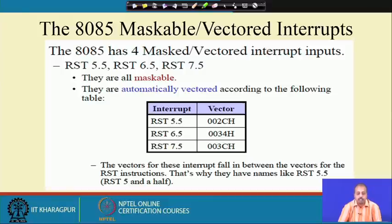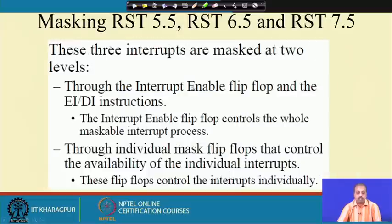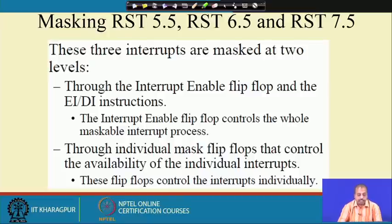We can mask off these interrupts. They are also vectored interrupts because the addresses are fixed — they are automatically vectored as per the table shown. Masking of interrupts 5.5, 6.5, and 7.5 can be done at two levels.